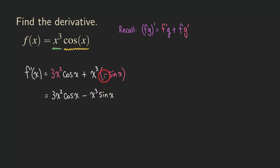That's due to when you differentiate the cosine, you'll get a negative in front of the sine. So that's where that negative sign comes from.